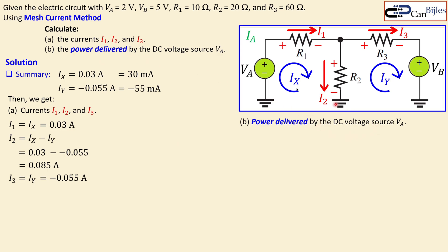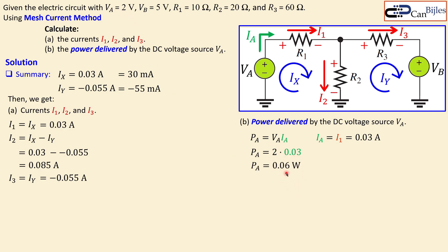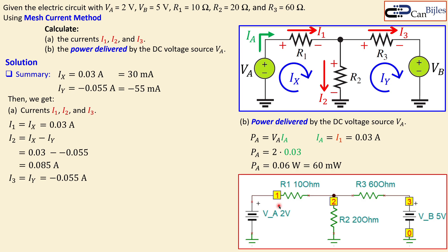Moving on to question B — the power delivered by voltage source VA. The formula is PA = VA times IA. The current through VA is exactly IA = I1 = IX = 0.03 A. Substituting: PA = 2 V times 0.03 A = 0.06 watts, or 60 milliwatts. That is the power delivered by this source in this circuit.